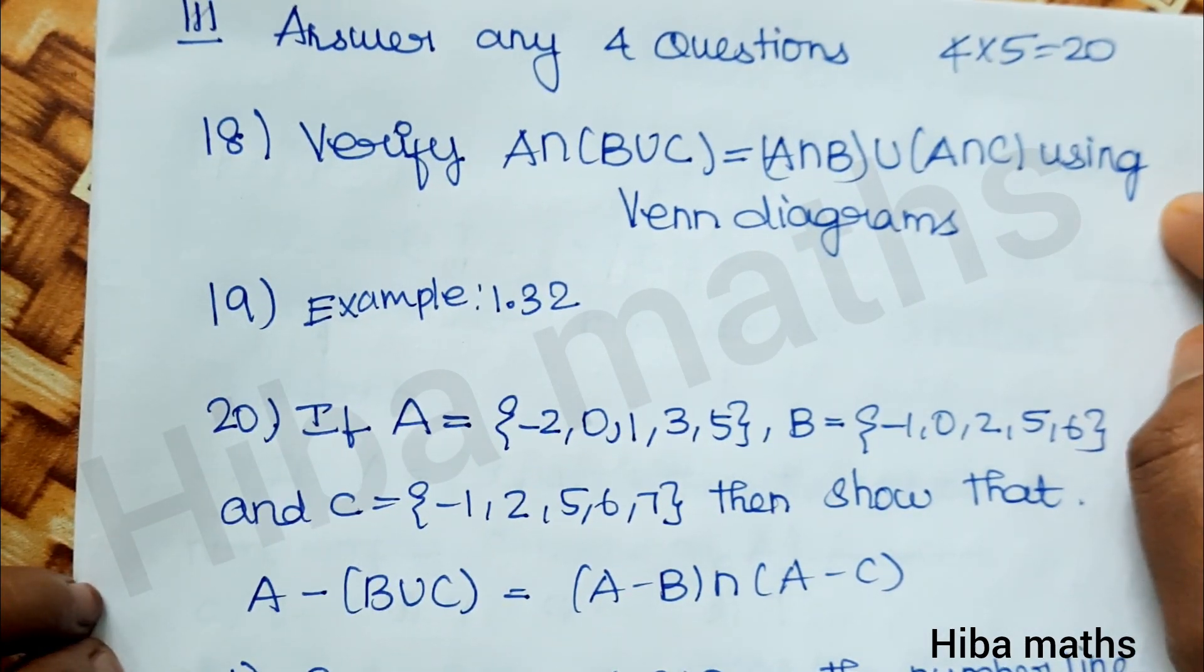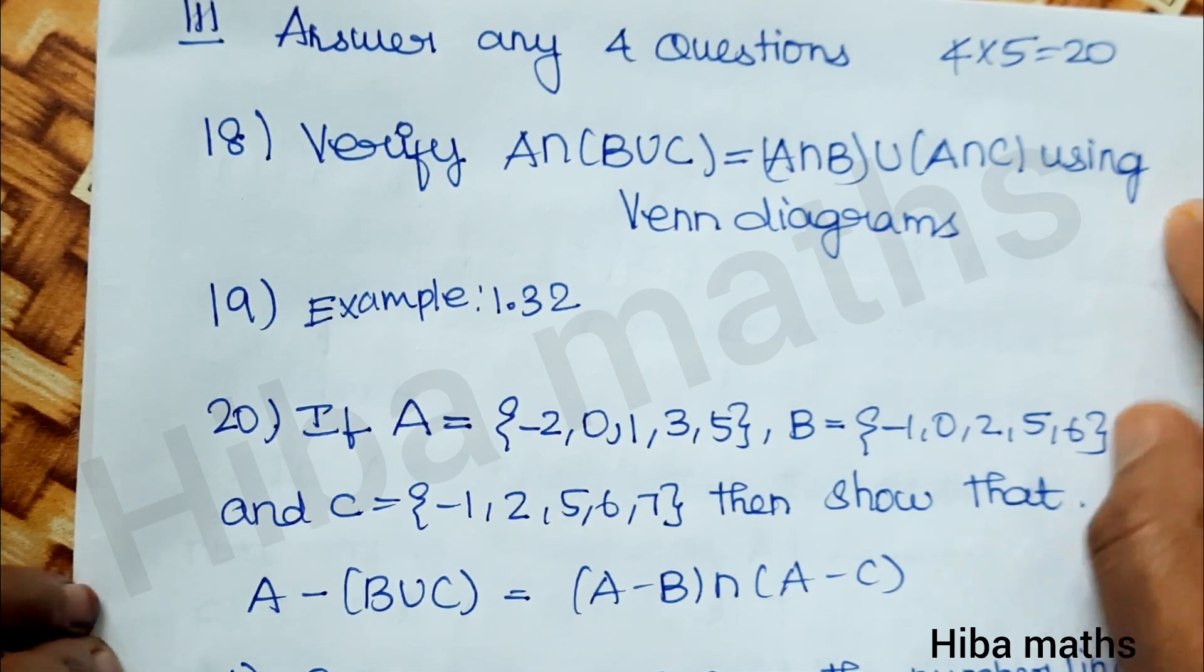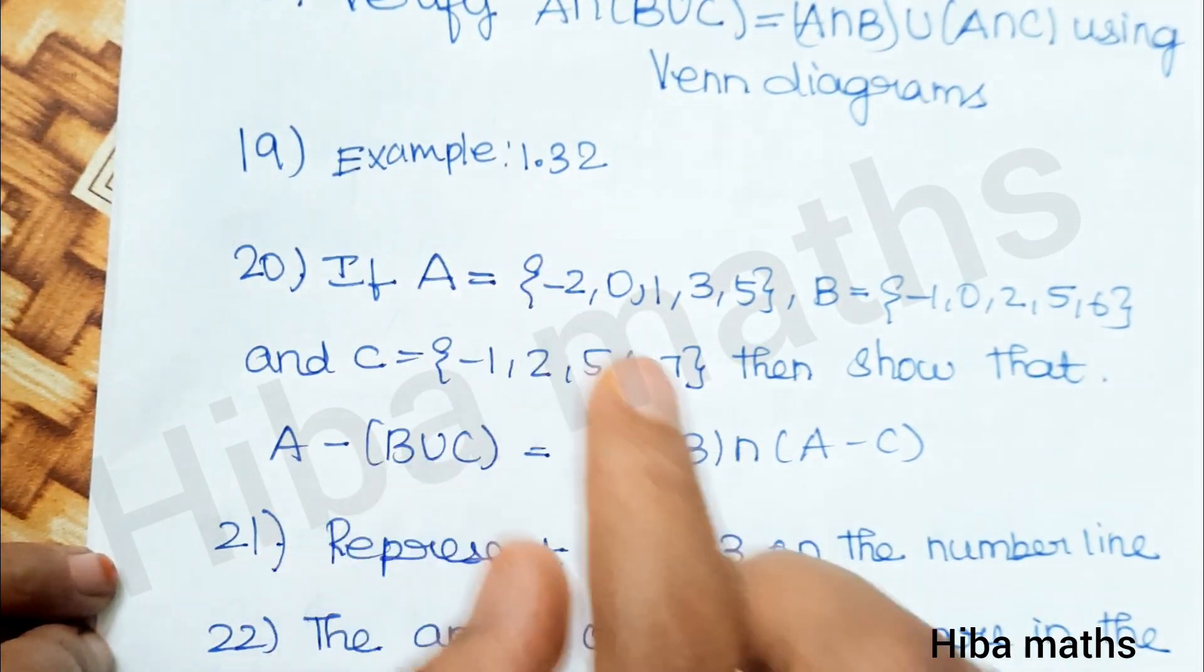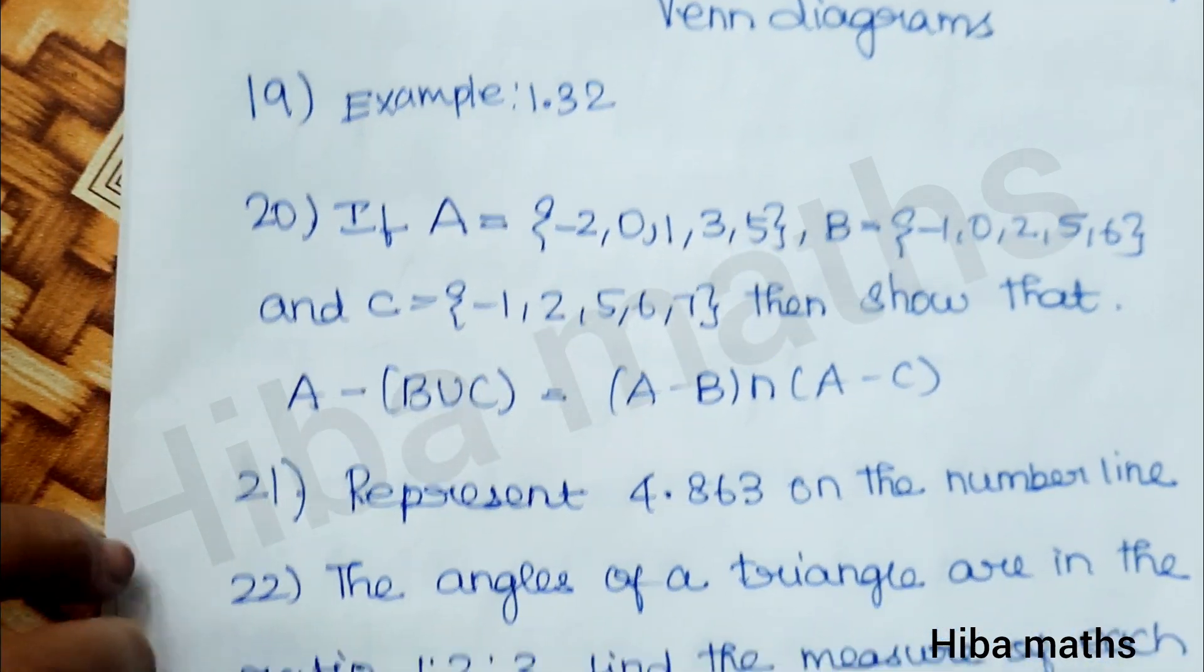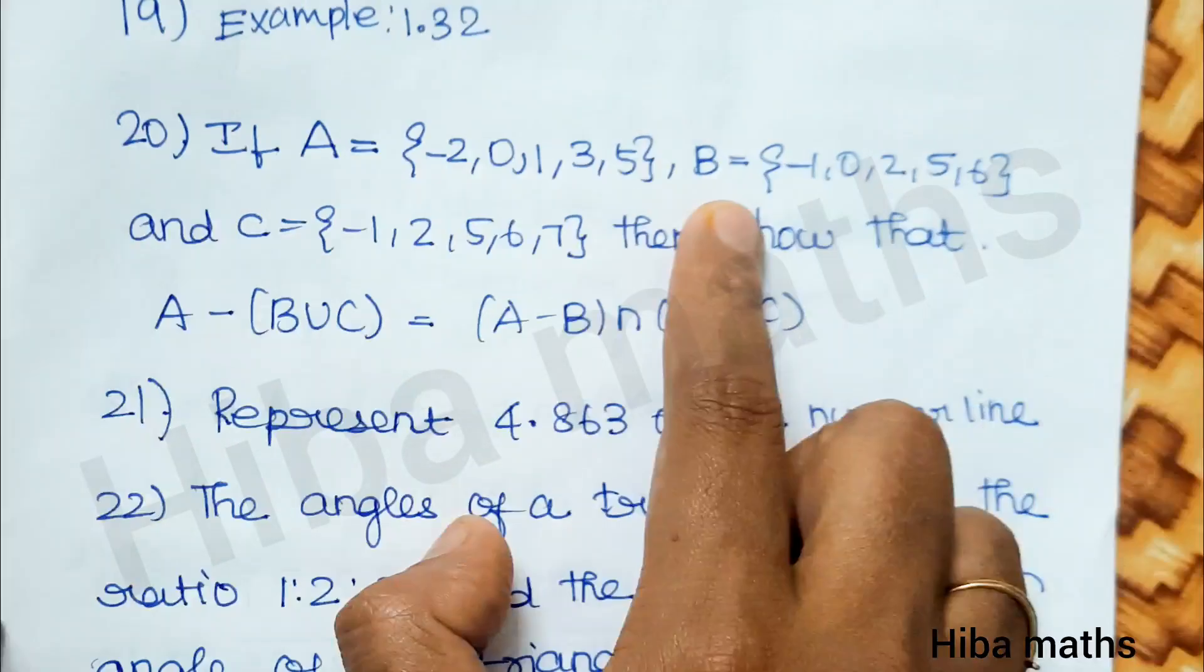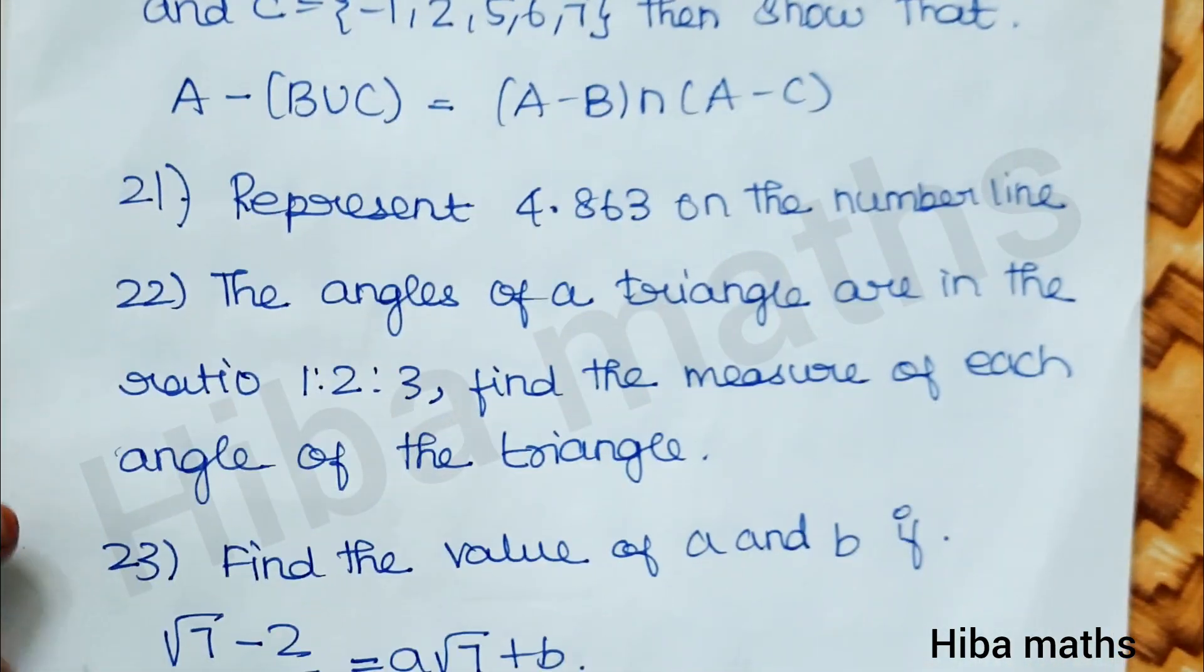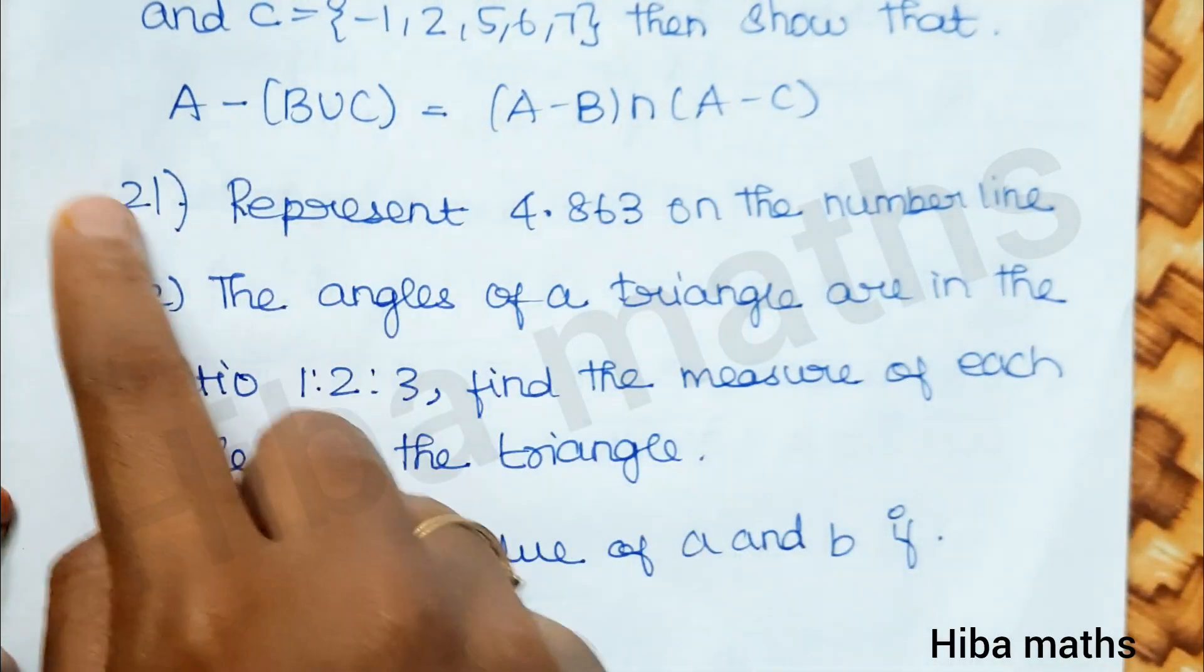First, verify A intersection (B union C) equals (A intersection B) union (A intersection C) using Venn diagram. Question example 1.32 - that question is very important. Represent 4.863 on the number line. This type of question is 1.32, so mark it.